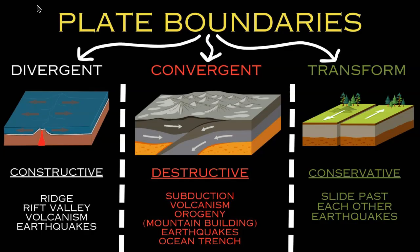The transform plate boundary is where plates slide past each other in different directions, speeds, and angles. Mostly you get earthquakes in this situation. Transform boundaries are called conservative because they neither construct new plates nor destroy plates like convergent boundaries do — they simply slide past each other and cause earthquakes.